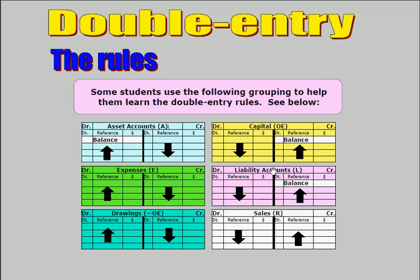Liability accounts such as creditors control, GST clearing, and loan accounts. The double entry accounting rules say the opening balance will be on the credit side, and anything which increases the value of the liability will be a credit entry.